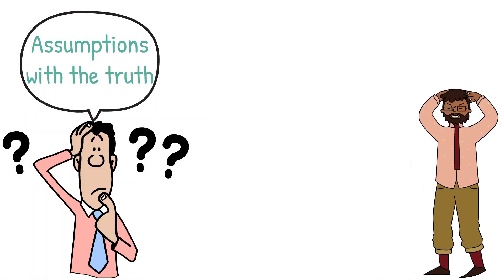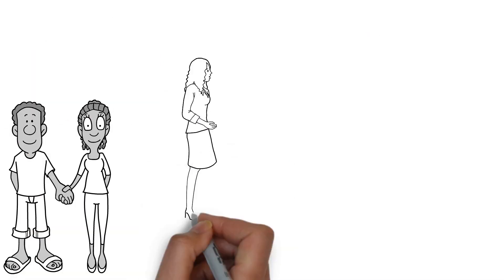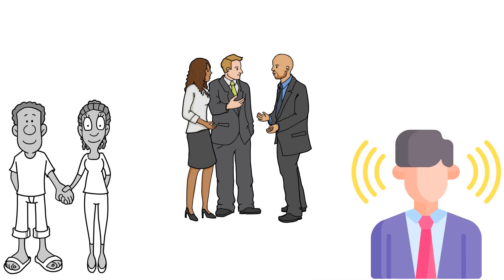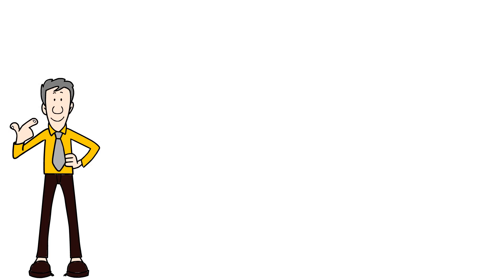Many times, we cause a lot of damage to ourselves by confusing our assumptions with the truth. Similar damages can happen with perceptions and expectations. Almost every relationship, whether at work or home, suffers from these three damages. Because we are often not even aware we are doing this, it takes conscious effort to overcome the tendency.